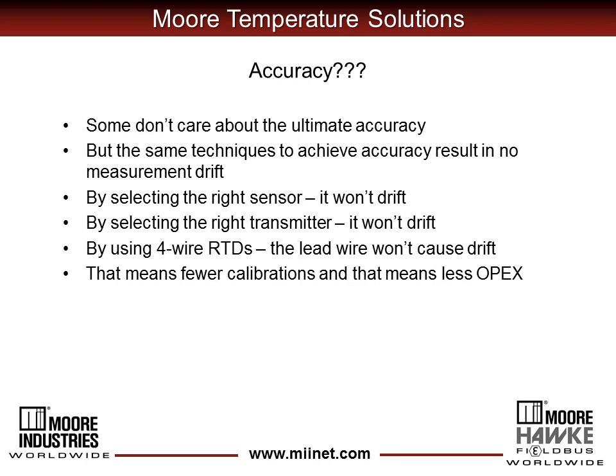Because the same techniques we use to achieve accuracy also achieve a more stable temperature measurement. Things like selecting the right sensor reduces drift. Selecting the right measuring instrument reduces drift. Using four-wire RTDs reduces drift caused by lead wire. And if you reduce drift, you push out the frequency of your calibrations and/or verifications, and that directly impacts operating expenses. So improving accuracy and reducing measurement drift can be related and can have measurable results.